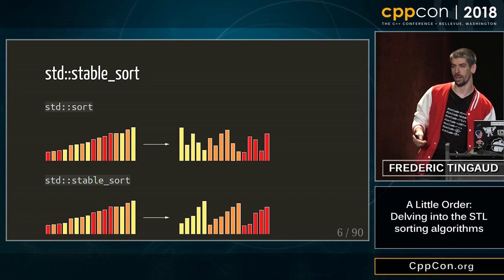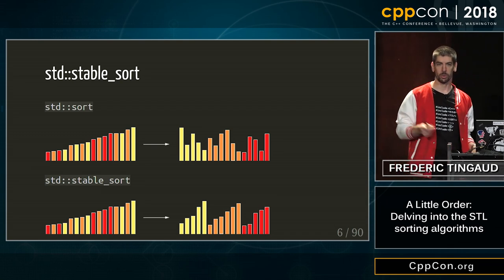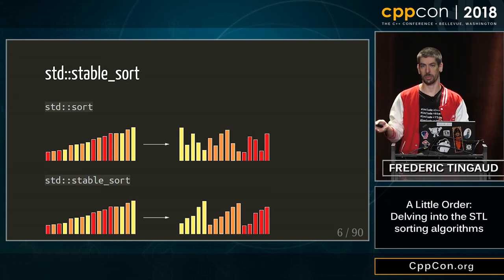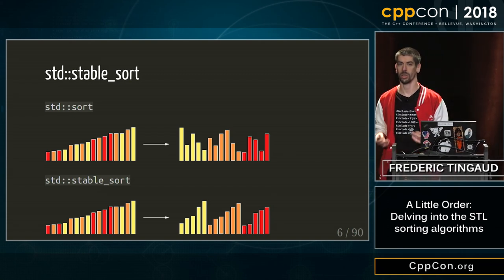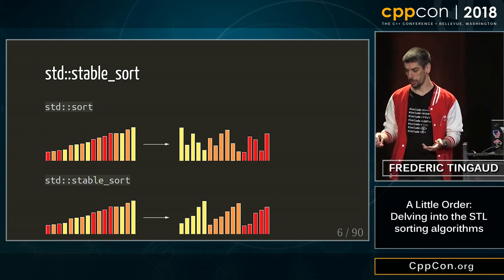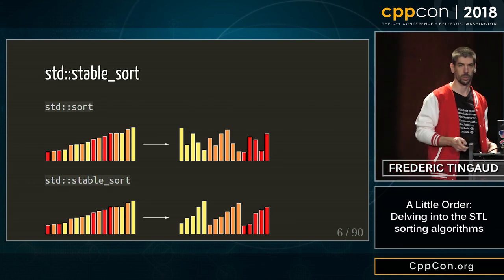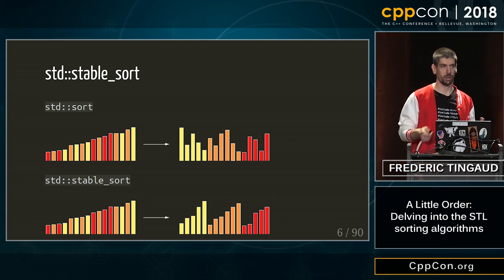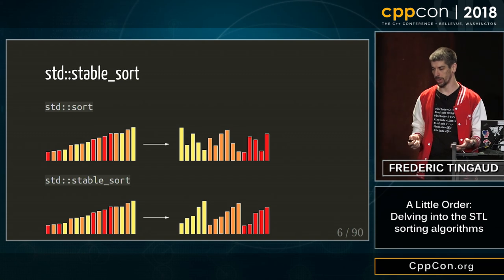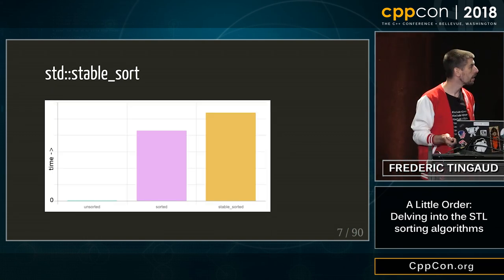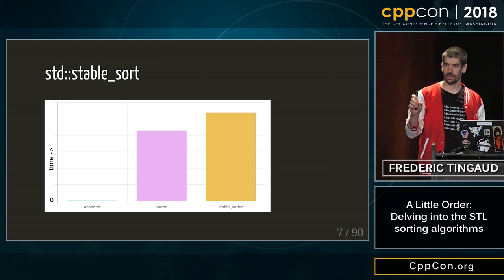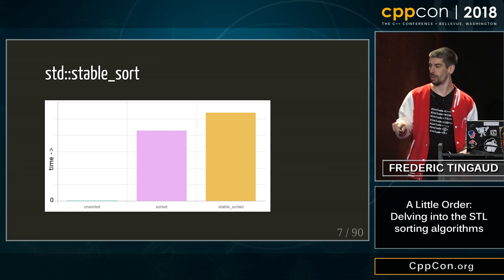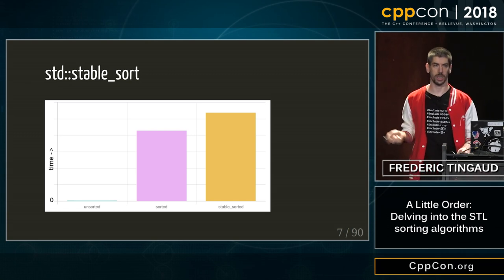For example, I sort my container by height. If I then sort it by color with sort, I will have something sorted by color, but I completely lose sorting by height. With StableSort, I keep the previous relative order, so everything is sorted by height and by color. It makes sense that when I run the benchmark, StableSort is a little bit slower than sort.